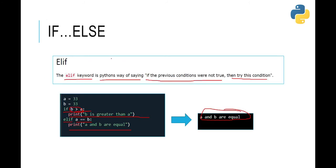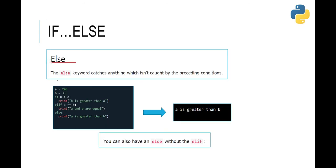Next we have the 'else' keyword. Before we saw the if statement, then elif — now we have else. The else keyword catches anything which isn't caught by the preceding conditions. In else, there is no condition. So we have three levels here: if b is greater than a; if that's false, go to elif — if a is equal to b; if that also fails, whatever is in the else gets executed. So 'a is greater than b' would be our answer. You can also have an else without elif — elif is not mandatory.